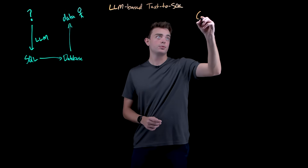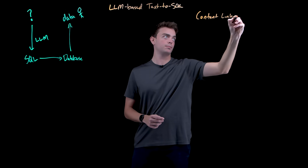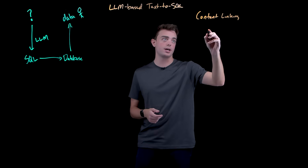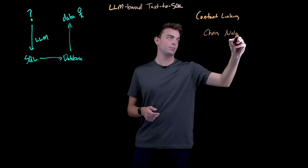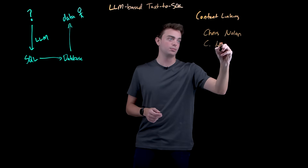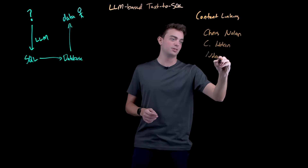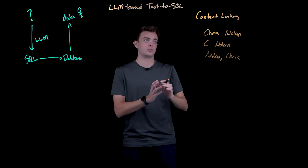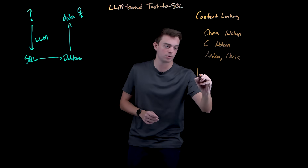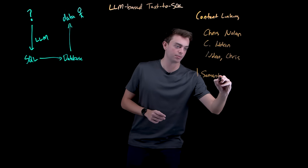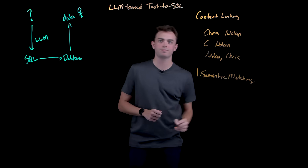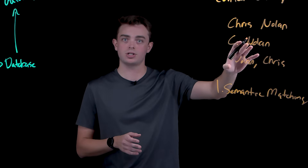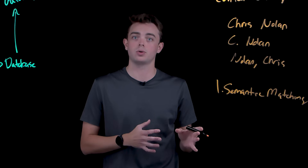Part two is content linking. Real-world databases are messy. That director's name might be stored as Chris Nolan, C. Nolan, or Nolan comma Chris. There's a million different ways you can enter someone's name, and so the AI needs to handle this through what we call semantic matching. The system doesn't just look for exact matches to Christopher Nolan — it understands that all three of these variations refer to the same person and can generate SQL that finds them all.